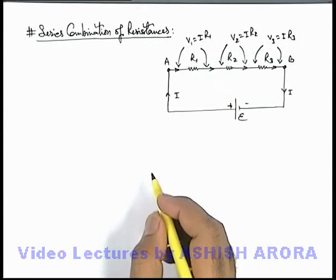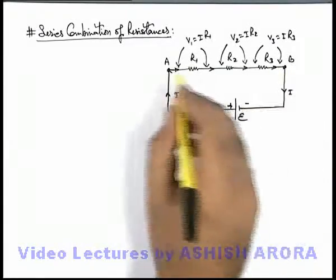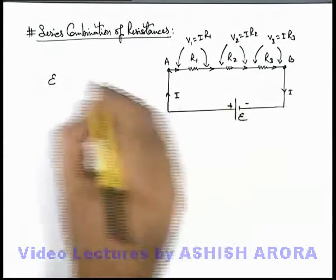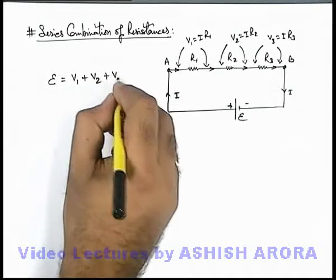And in this situation we can say the total potential difference applied across the terminals A and B is E. So here this total potential difference which is the battery EMF can be written as sum of these potential differences V1, V2, and V3.